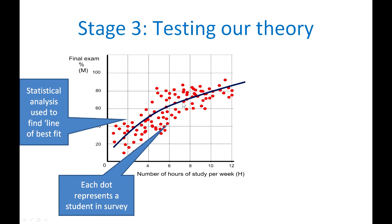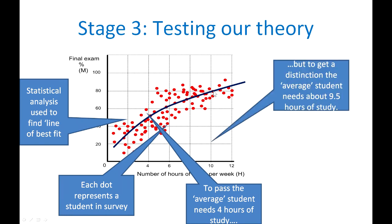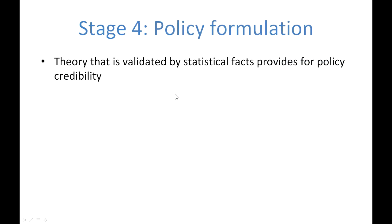It's now up to us to try and explain why this is. But we can conclude that the statistics appear to show that to pass and that was get 50%, on average a student needs about four hours of study. But to get a distinction up here 80%, you need about nine and a half to ten hours of study. We're now in a position to form policy based on our theory. We have our theory. We have validated it using statistics. And all of this gives our theory much more credibility from a policy point of view.